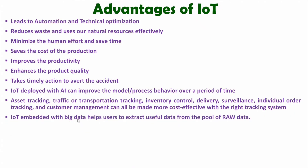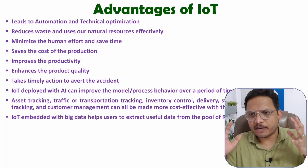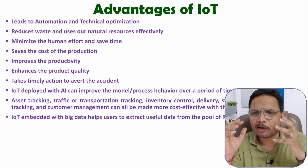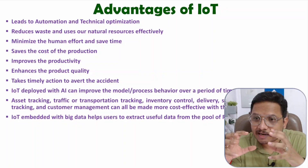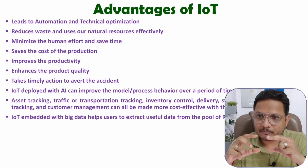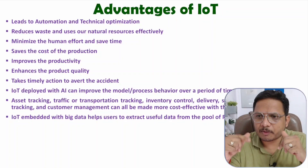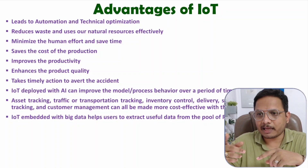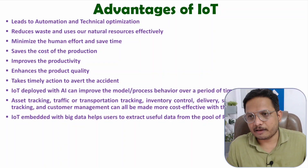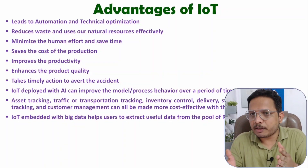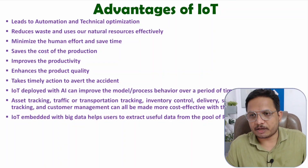IoT embedded with big data helps users to extract useful information from a pool of raw data. Usually we will be having lots of data, and if you have lots of data, then you will have to extract useful information. So in big data, if you have raw data and you extract useful information and process it, then you will be doing meaningful activity. That is what we do with IoT applications.